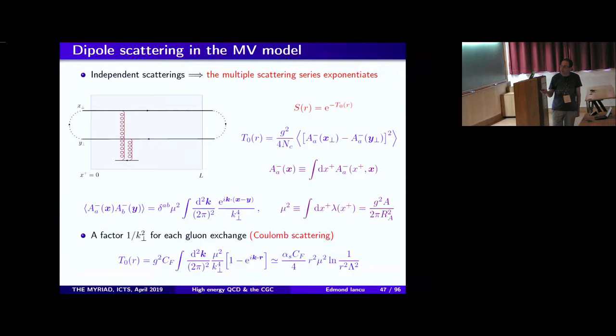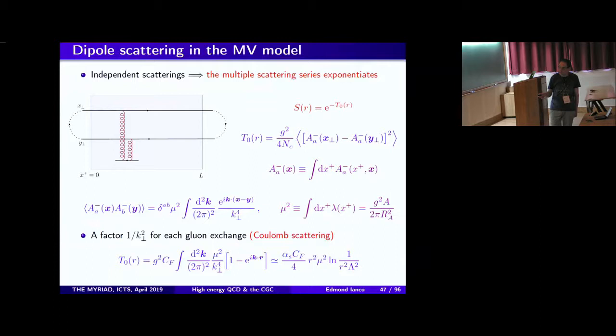The compensation between scattering of the same quark and scattering of a quark-antiquark pair is typical for a dipole, because the dipole is overall color neutral. When the momentum k-perp becomes arbitrarily small — meaning the exchange has very long range — the exchanges do not distinguish between the quark and the anti-quark. They only see an overall color singlet system with no charge, so there should be no scattering. When r goes to zero and k·r goes to zero, the cancellation is exact.